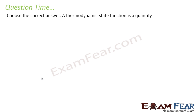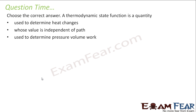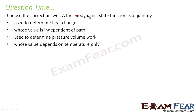Some NCERT questions now. Choose the correct answer: a thermodynamic state function is a quantity — used to determine heat change, independent of path, used to determine pressure-volume work, or whose value depends only on temperature. The thermodynamic state function is not only used to determine heat change, and it is not only for pressure-volume work, nor does its value depend only on temperature. The correct option is that it is independent of path.